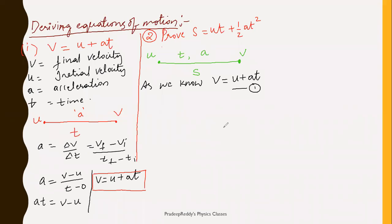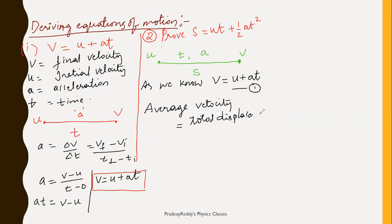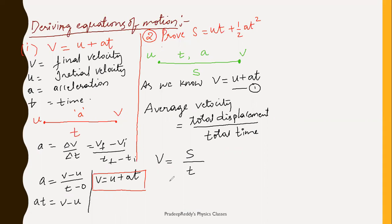We also have the relation for average velocity: average velocity = total displacement / total time. The body is traveling total displacement s in time t. From here you can simply write displacement s = average velocity × time t. Let me take this as equation 2.